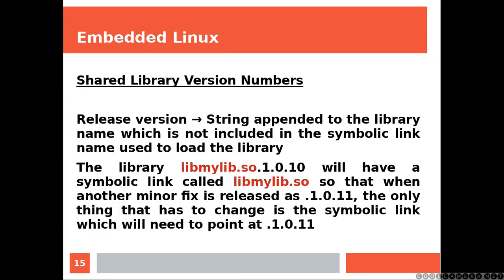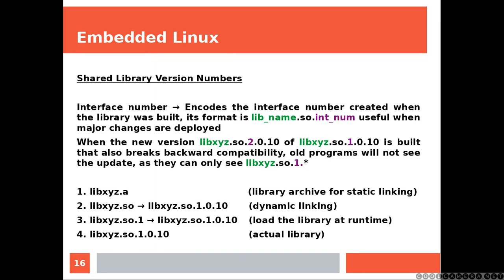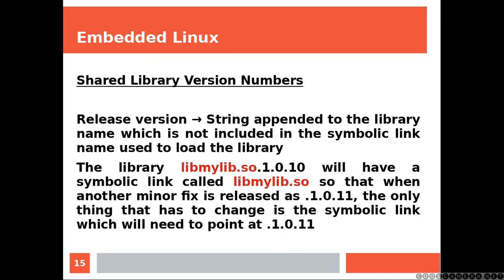To talk about shared library version numbers, we need to introduce the concept of release version and interface number. The release version is a string appended to the library name which is not included in the symbolic link name used to load the library. So the library libmylib.so.1.0.10 will have a symbolic link called libmylib.so, so that when a minor fix is released as 1.0.11, the only thing that has to be changed is the symbolic link which will point to 1.0.11. The program will notice nothing because it's going to be working with the link.